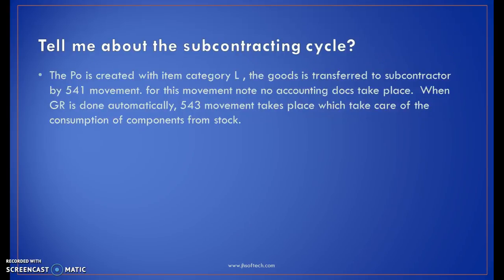Tell me about the subcontracting cycle. In the subcontracting cycle, the purchase order is created with item category L — whenever it is a subcontracting type, the category will be L. The goods are transferred to the subcontractor by 541 movement type, for which no accounting documents take place. When GR is done, automatically 543 movement takes place, which takes care of the consumption of components from the stock.